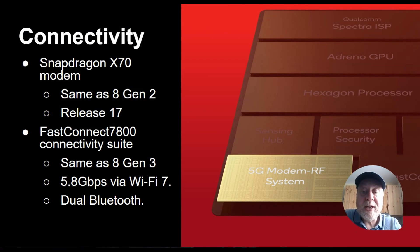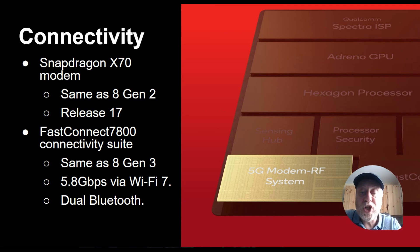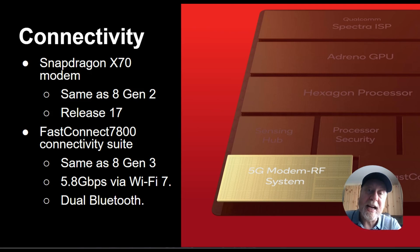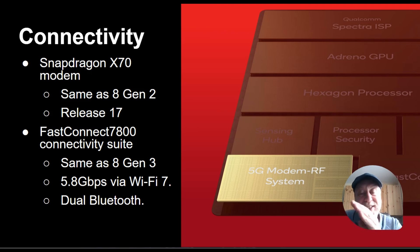For connectivity, there's a Snapdragon X70 modem — the same as in the 8 Gen 2, not the one found in the 8 Gen 3. That's 5G Release 17. In real terms you're not going to notice any difference. You do get the same Fast Connect 7800 for Wi-Fi and Bluetooth as the 8 Gen 3: 5.8 Gbps maximum theoretical from Wi-Fi 7, dual Bluetooth, and so on. So slightly lower on 5G, but you won't notice the difference, and the same Wi-Fi and Bluetooth.